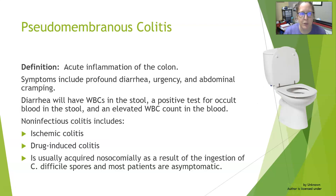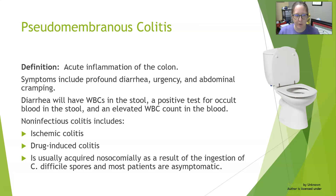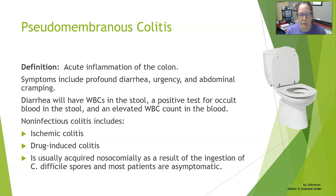Next we have pseudomembranous colitis. It is an acute inflammation of the colon. The symptoms are profound diarrhea, urgency, and abdominal cramping. The diarrhea will have white blood cells in the stool, a positive test for occult blood in the stool, and an elevated WBC count — a white cell count in the blood on the CBC.